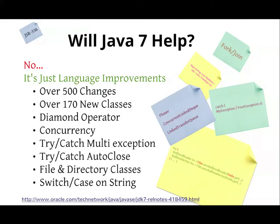There are over 500 changes — over 170 new classes. Most of you could care less about the 120 surrounding Swing. A lot of that stuff is around concurrency and Java NIO. The new file system stuff is really good. There's a diamond operator — when you define collections you used to have to put the type on both left and right sides; now you just say new ArrayList on the right without specifying the type again. It's just a shortcut.